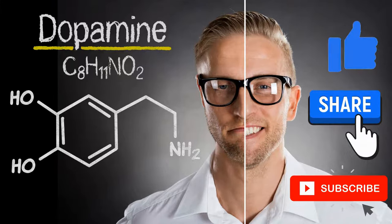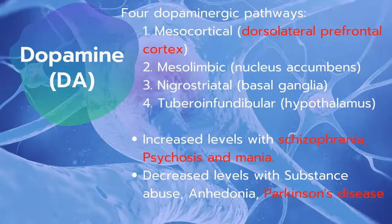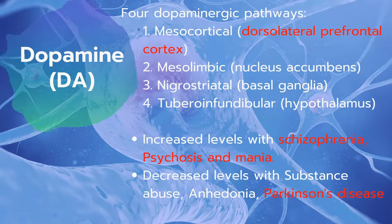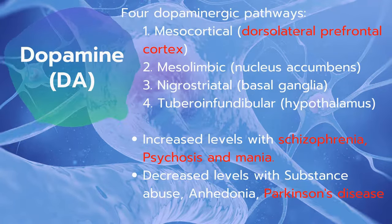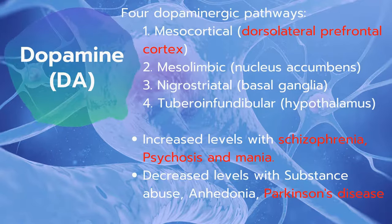I previously did a video on dopamine covering the four dopamine pathways in detail, so check that out if needed. The third neurotransmitter is dopamine, also known as DA. The four dopaminergic pathways are: the mesocortical pathway, mesolimbic pathway, nigrostriatal pathway, and tuberoinfundibular pathway.